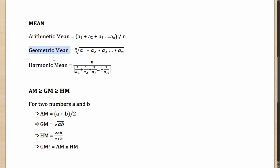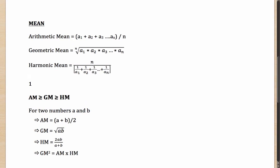Moving on to geometric mean — when does that come in handy? If a company has grown by 10%, 20%, 30% in three years, and you want the average growth rate or CAGR (compounded annual growth rate), geometric mean is used. A 10% growth is multiplying by 1.1, 20% by 1.2, 30% by 1.3. You multiply these values and raise them to the power of 1/3 (the cube root). If the result is 1.18, your CAGR is 18%. That is how geometric mean comes in handy.